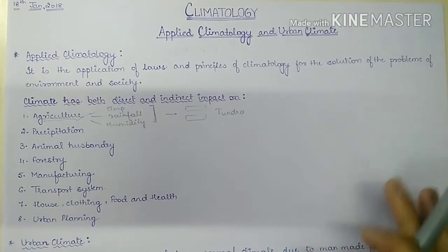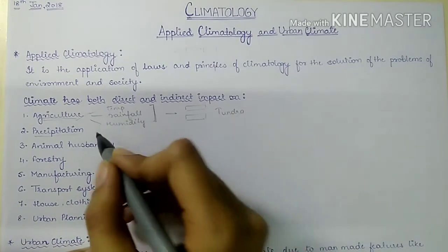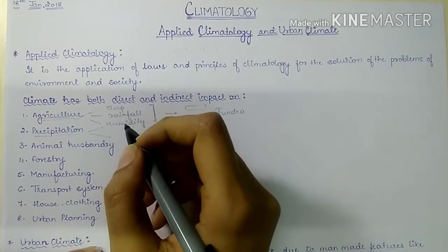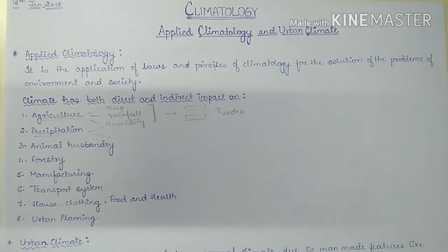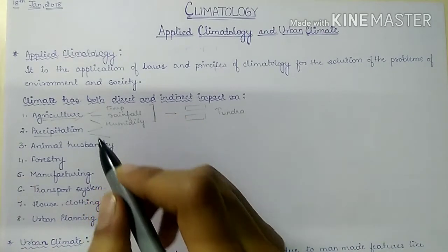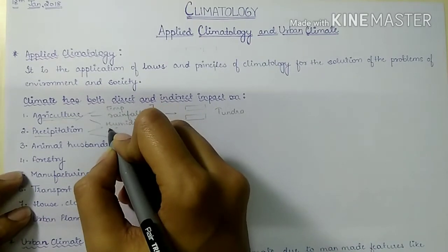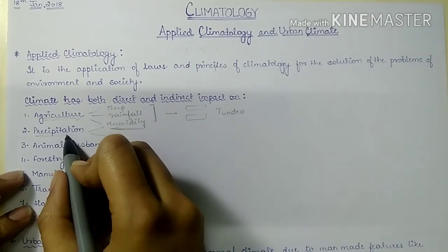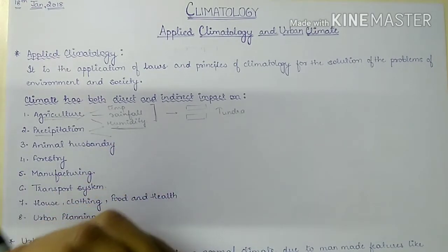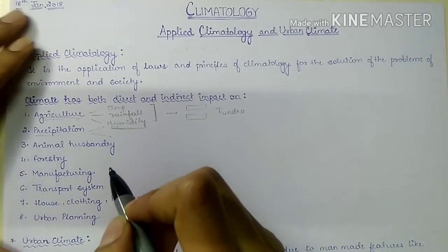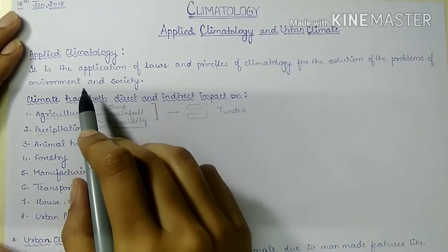Precipitation also affects agriculture significantly. Heavy rainfall during flowering and pollination can decrease crop yield because pollens are washed away, preventing pollination. Water logging during harvesting is also harmful for certain types of crops.